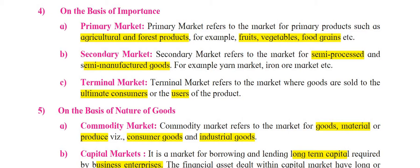The second is secondary market. As the term itself suggests, secondary market refers to markets for semi-processed or semi-manufactured goods. For example, from iron ore market you get iron ore, from which you can manufacture many final products. These are called semi-finished goods, and from here a final product can be prepared. That is why they are called secondary market.